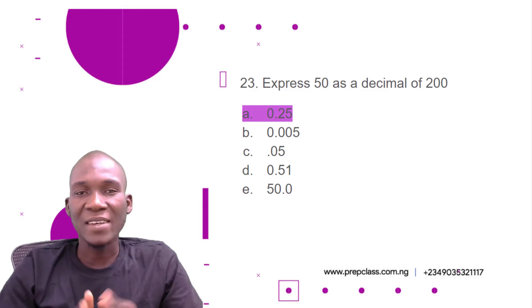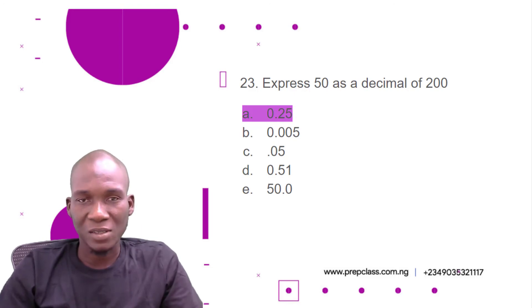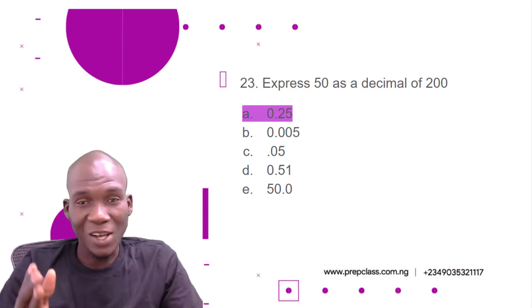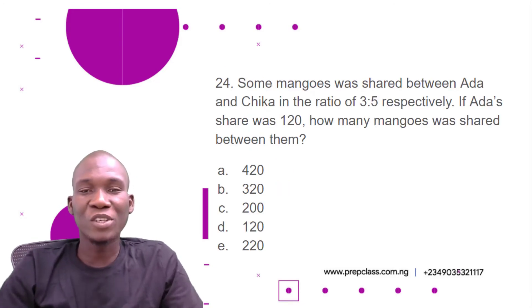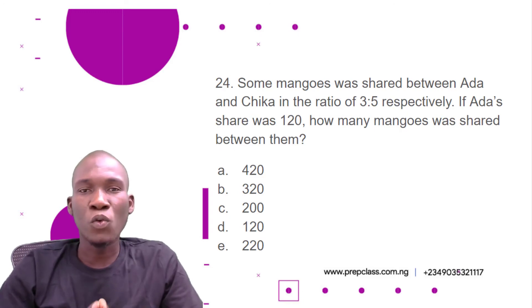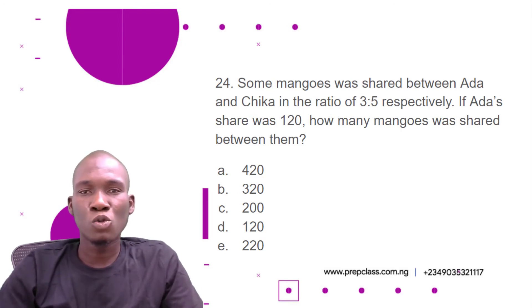Fractions can be converted to decimals and vice versa. Now we move to the next question. Question number 24: some mangoes were shared between Ada and Chika in the ratio 3:5 respectively. If Ada's share was 120, how many mangoes were shared between them? Options: A) 420, B) 320, C) 200, D) 120, E) 220.